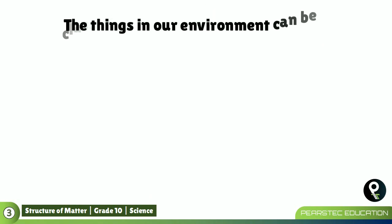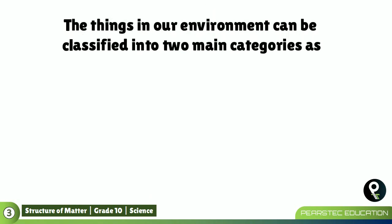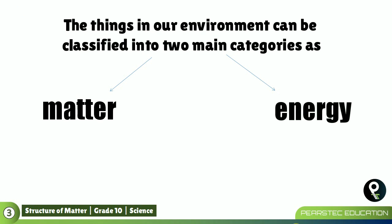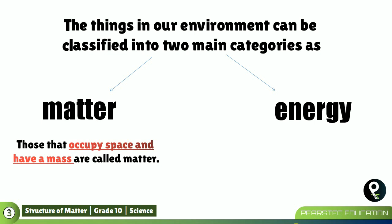The things in our environment can be classified into two main categories: number one, matter, and the next category is energy. Those that occupy space and have a mass are called matter. We were learning these things when we were in grade six, seven, eight, nine, ten up to now.